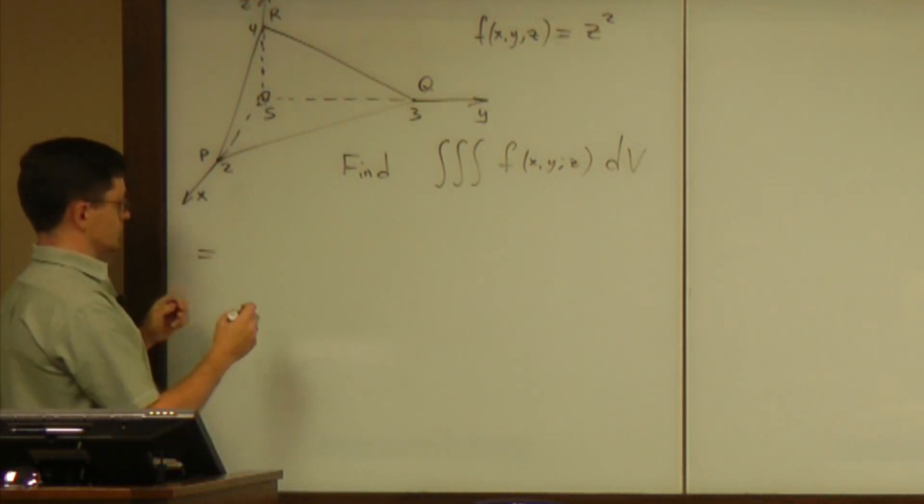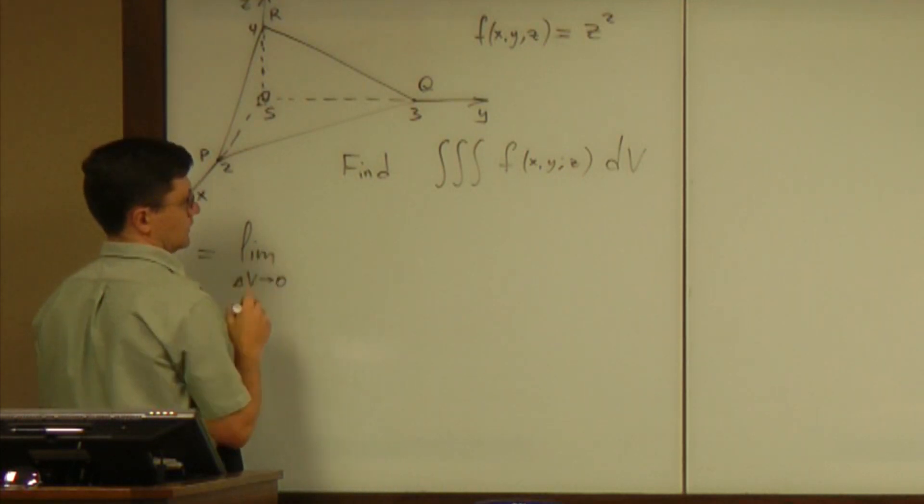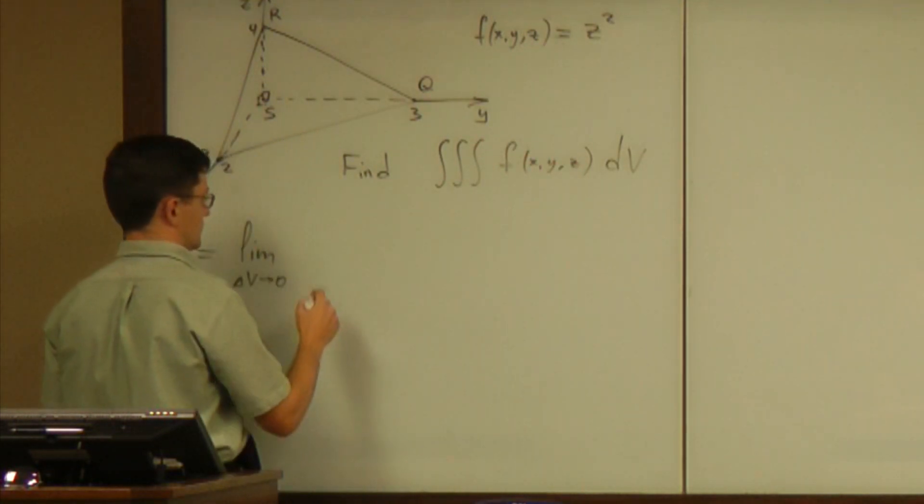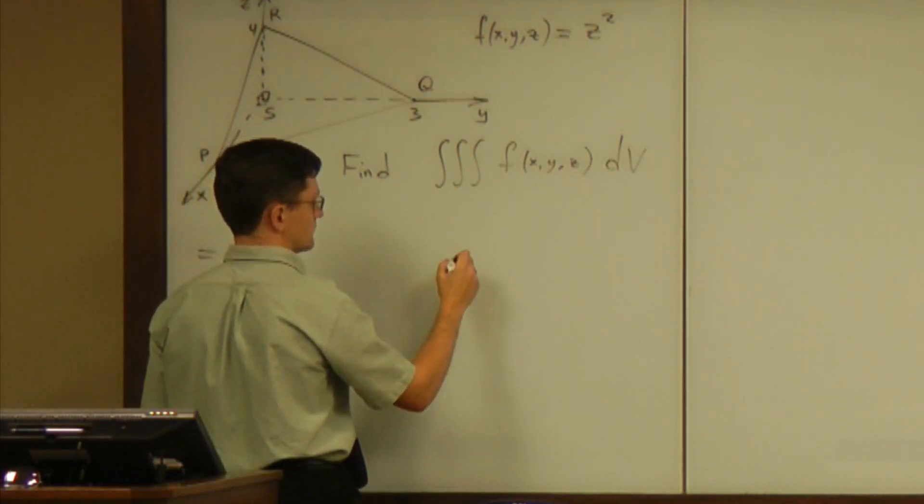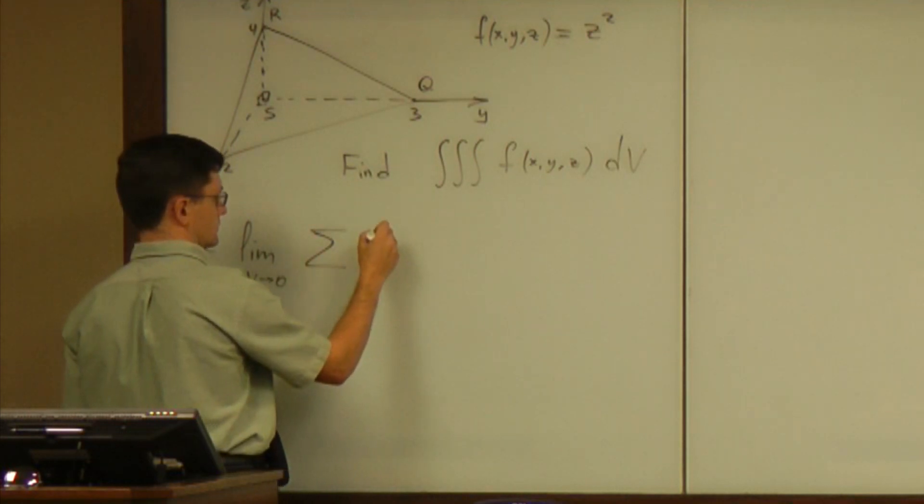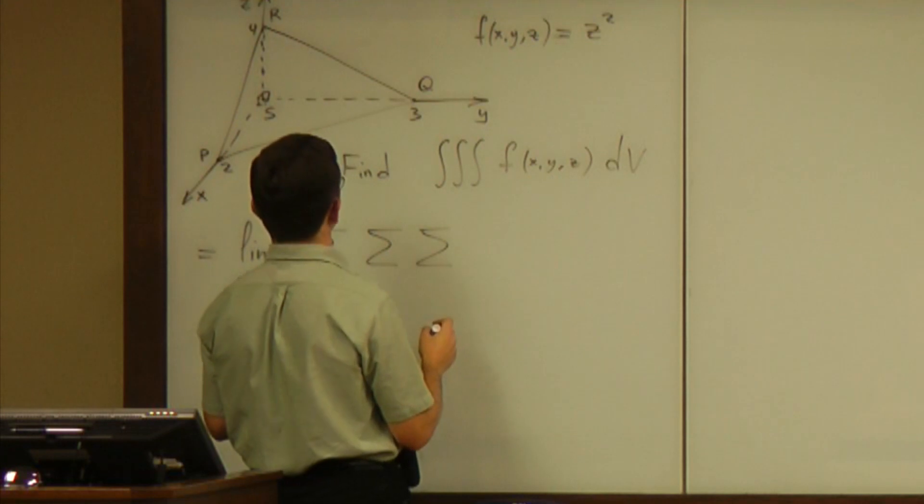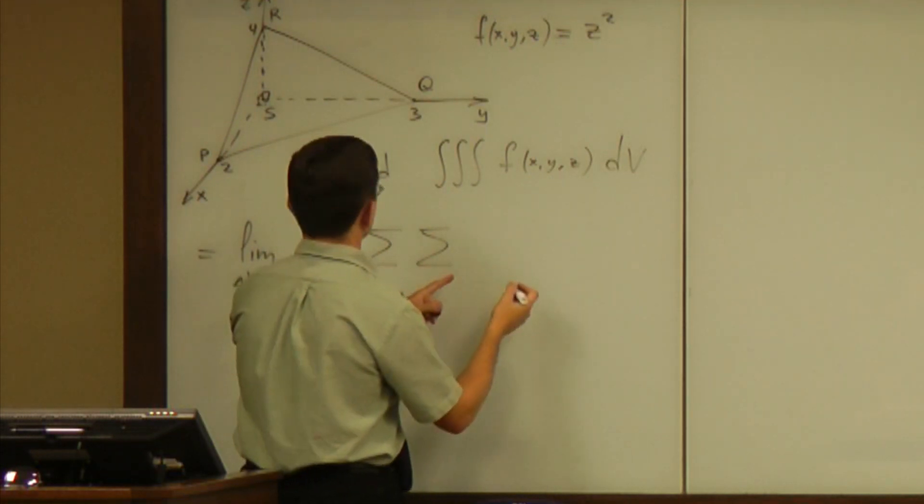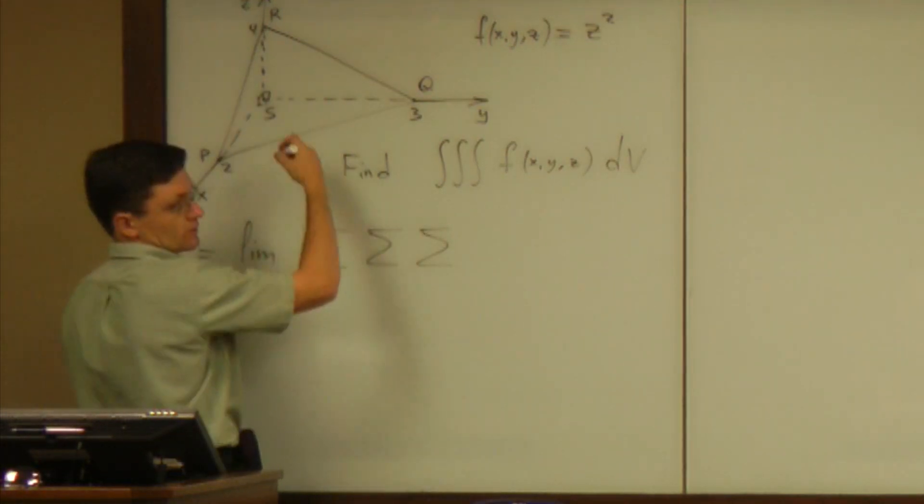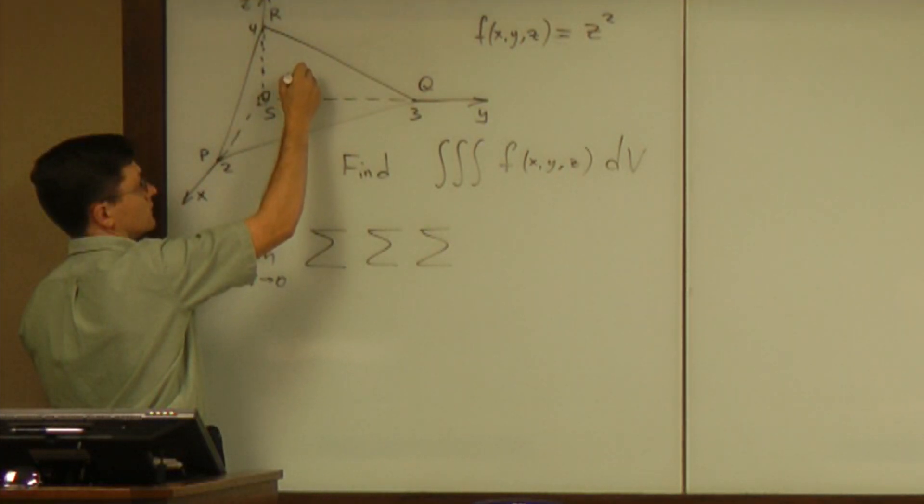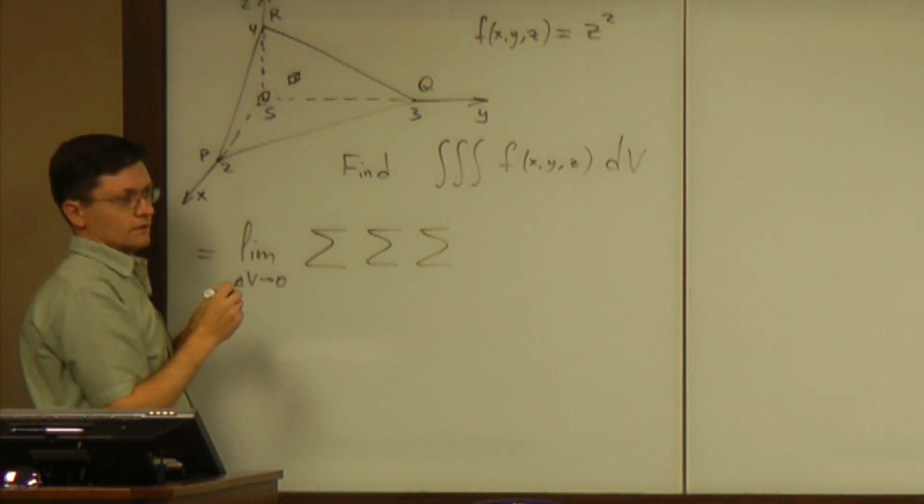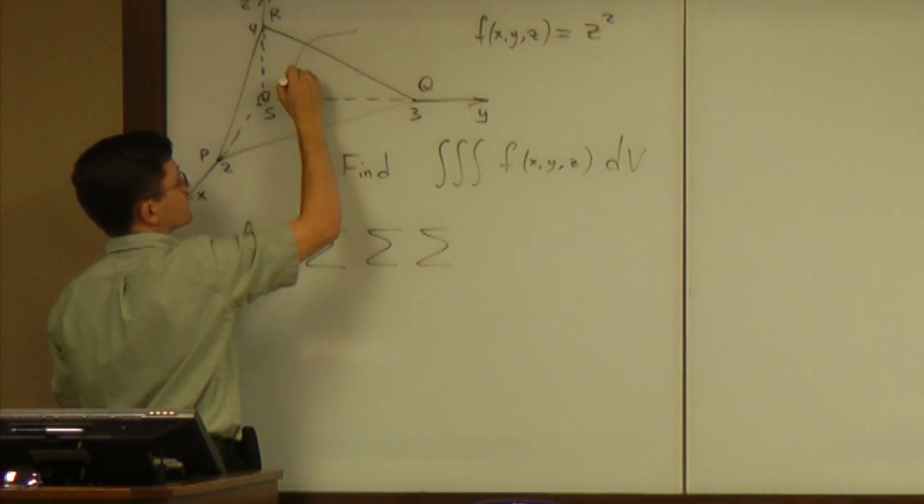So, by definition, that triple integral is the limit as delta V goes to zero of what? So, this is the limit of the sum of the sum, and there will be three sum, and what is it that we are adding up?